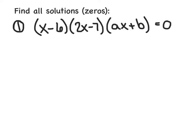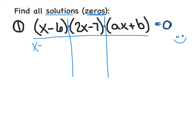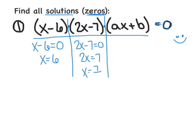Now we're ready for the meat of tonight's video. We'll be asked to find all solutions, or find all zeros — any number you substitute for x that forces the polynomial to equal zero. The first example is already factored completely, so we just use the zero product law: (x minus 6) equals 0 gives x equals 6; (2x minus 7) equals 0 gives x equals 7/2; and (ax plus b) equals 0 gives x equals negative b over a.